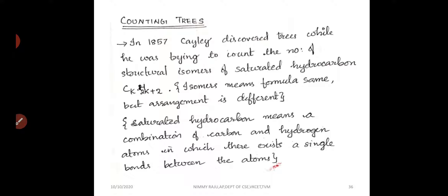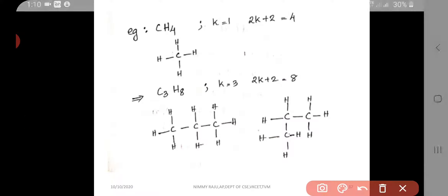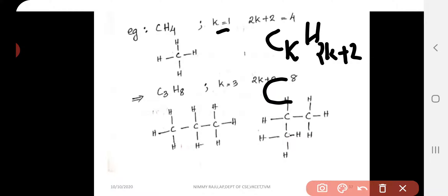In the counting tree problem, one isomer is represented as a tree, so we are counting the number of structural isomers. The chemical formula of a saturated hydrocarbon is CₖH₂ₖ₊₂, where there are k carbon atoms and 2k+2 hydrogen atoms. For example, when k=1, we have 1 carbon atom and 2(1)+2=4 hydrogen atoms, giving CH₄.